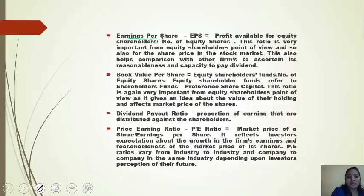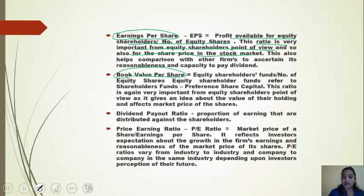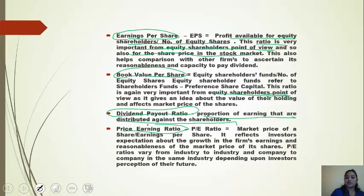Earnings per share (EPS) is the ratio of profits available for equity shareholders to the number of equity shares. This ratio is very important from equity shareholders' point of view and for the share price in the stock market. Book value per share is equity shareholders' funds divided by number of equity shares. Dividend payout ratio is the proportion of earnings distributed among shareholders. Price-earning ratio is market price of a share divided by earnings per share, and refers to investors' expectations from growth in the firm's earnings.